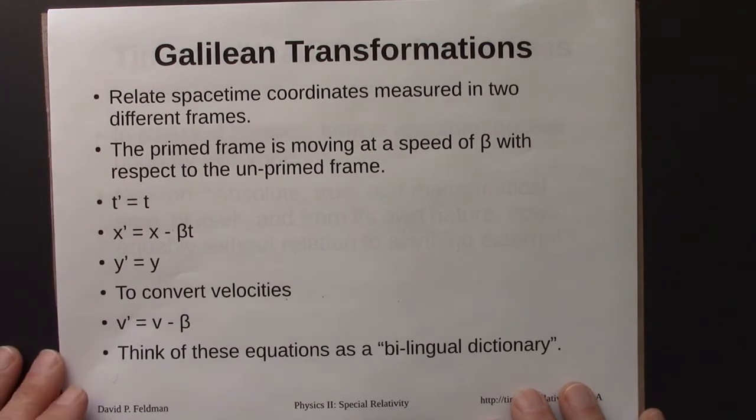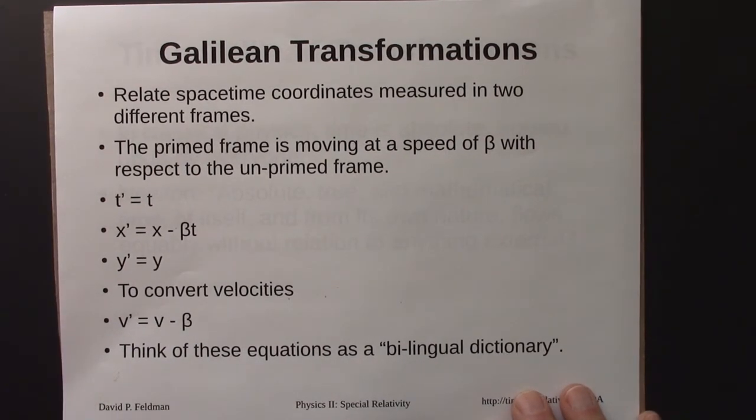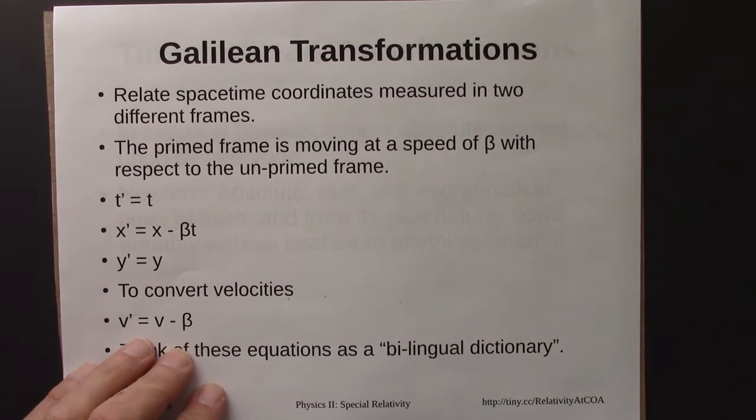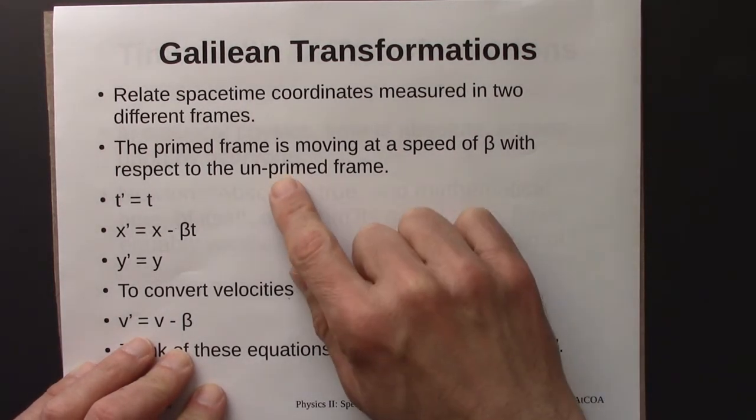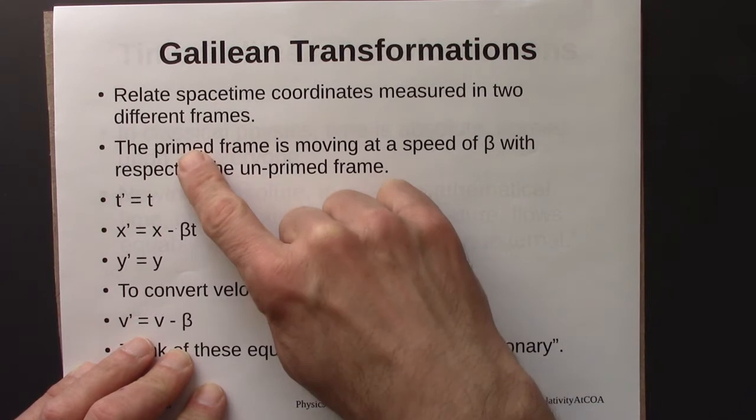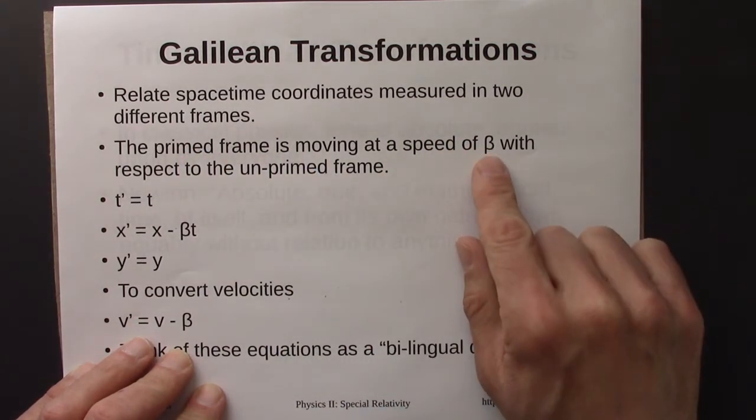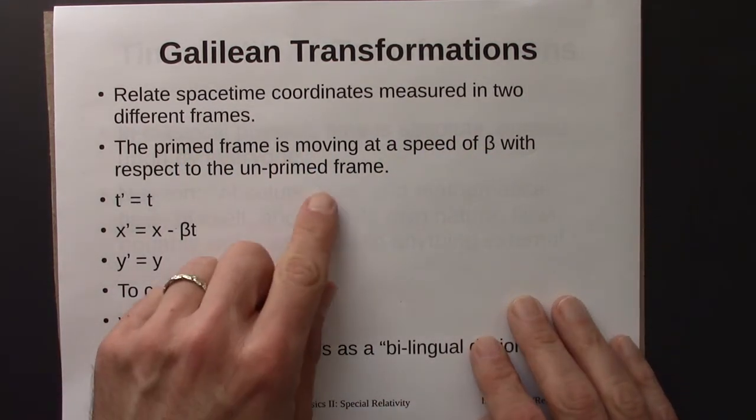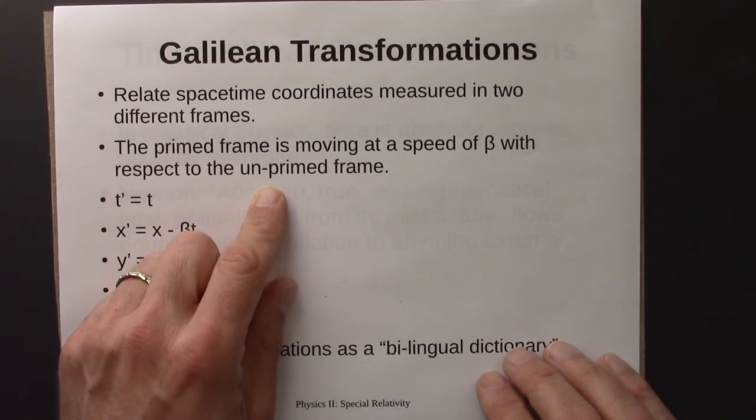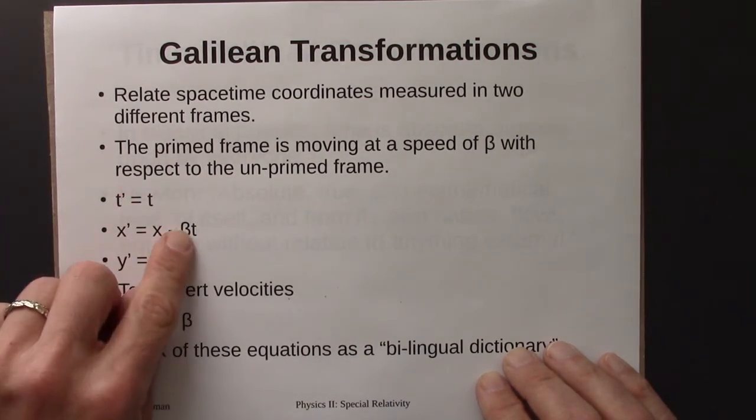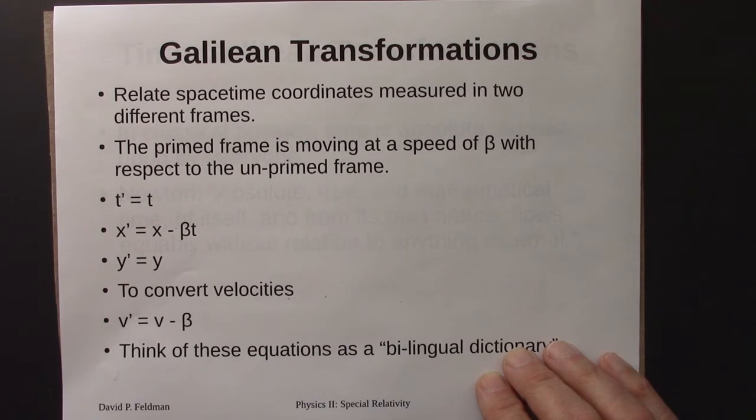So observers in different reference frames will often have different spacetime coordinates for the same event. And the Galilean transformations allow us to translate from one reference frame to another. So as we have before, we have one reference frame that's moving, call that the primed frame at a speed of beta, and then the other reference frame is at rest.